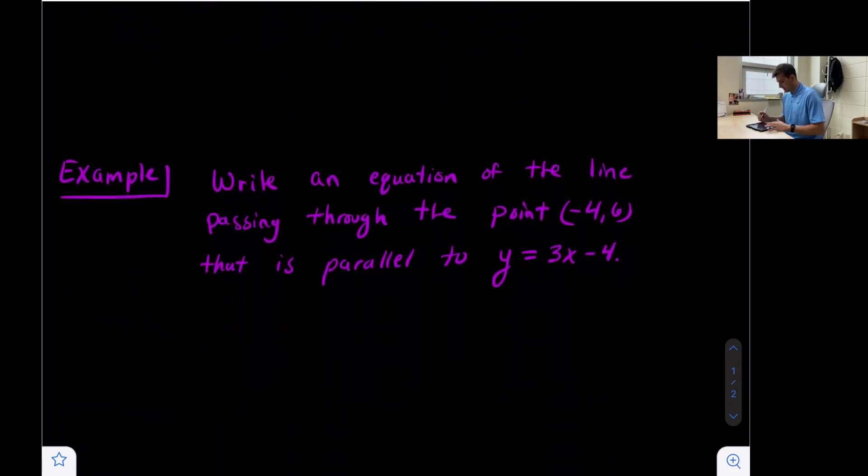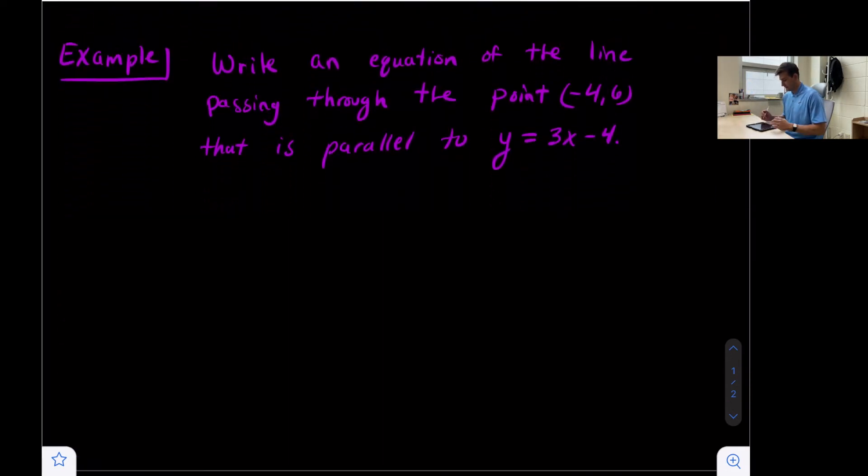We're going to look at how to write an equation of a line that's parallel to another line and passes through a given point. Here's our example: write an equation of the line passing through the point (-4, 6) that is parallel to y = 3x - 4.